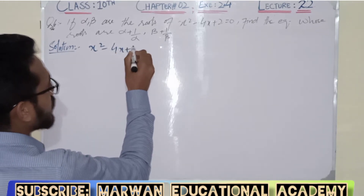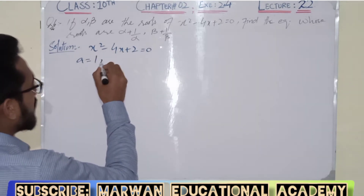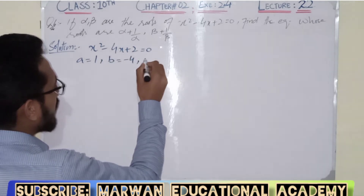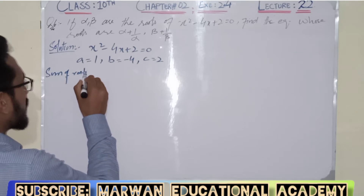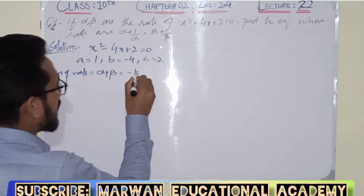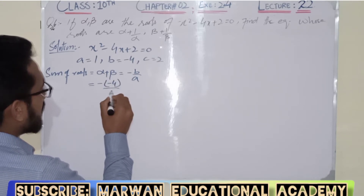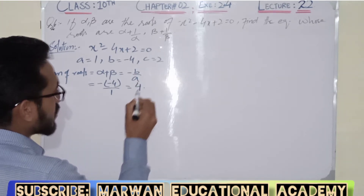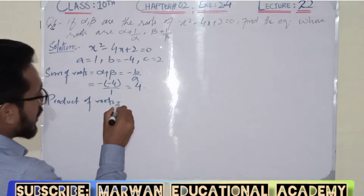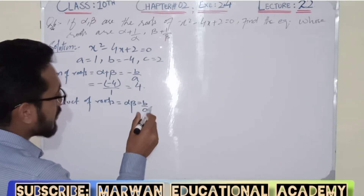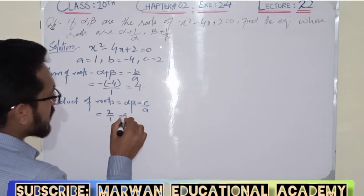The equation is x squared minus 4x plus 2 equals 0. Here a equals coefficient of x squared which is 1, b equals coefficient of x which is minus 4, and c equals the constant which is 2. Sum of roots equals alpha plus beta equals minus b over a, so minus of minus 4 divided by 1, which equals 4. Product of roots equals alpha beta equals c over a, so 2 divided by 1, which equals 2.